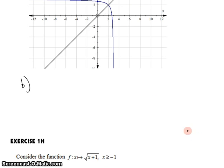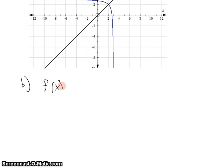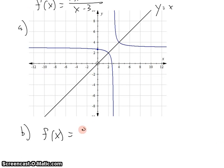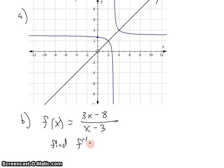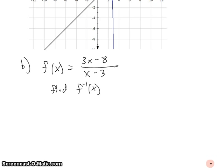For part b, we'll find the same result by algebra by finding the inverse of the function. So our function f(x) = (3x - 8)/(x - 3), we'll need to find the inverse. The way that you go about finding the inverse of any function is to swap your variables. f(x) becomes x, and x becomes f^(-1)(x). So we get x = (3f^(-1)(x) - 8)/(f^(-1)(x) - 3).